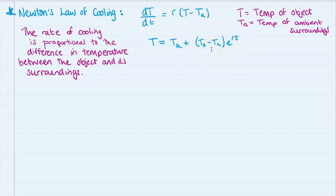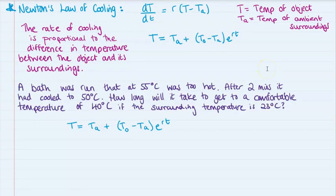So let's see this as an example. So in this situation, we have a bath that was run and it was too hot at 55 degrees to begin with, that's not comfortable to get into. So we need to wait for it to cool down. So after two minutes, it had cooled down to 50 degrees. We want to know how long would it take to get to a comfortable 40 degrees if the surrounding temperature of the room that this bath is in is 23 degrees.